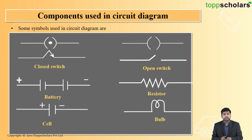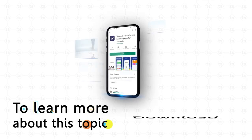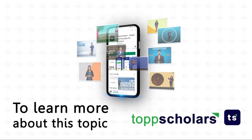And then you can call it as a bulb. A bulb is nothing but another type of a resistor. And the last, that is the connecting wires. So basically, these seven are the components used in a circuit diagram. To learn more about this topic, download Top Scholars app.